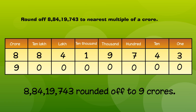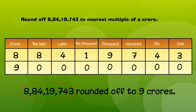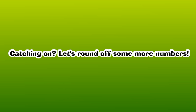Thus, 8 crores, 84 lakhs, 19,743 can be rounded off to 9 crores. Catching on? Let's round off some more numbers.